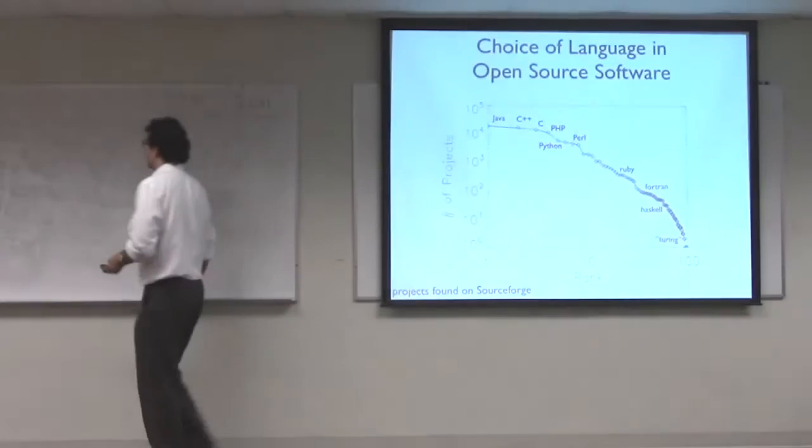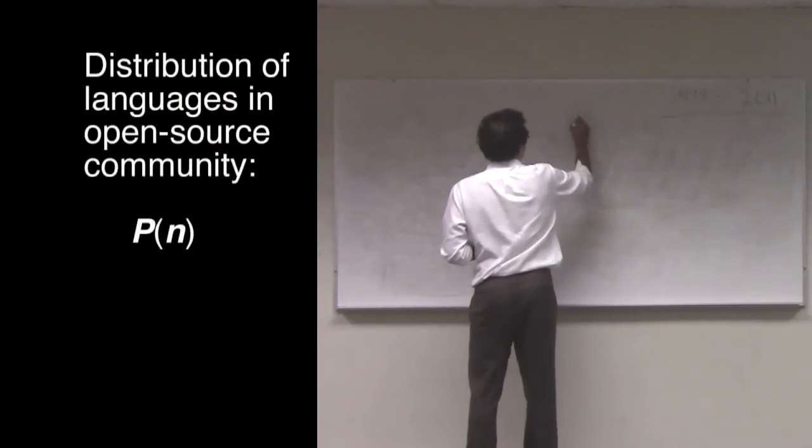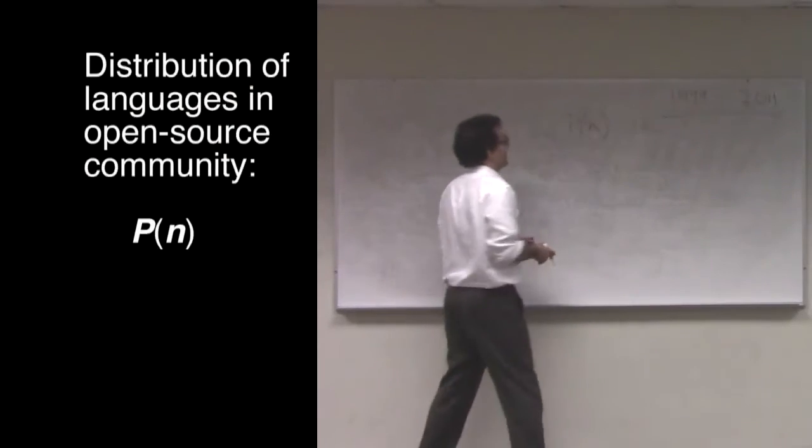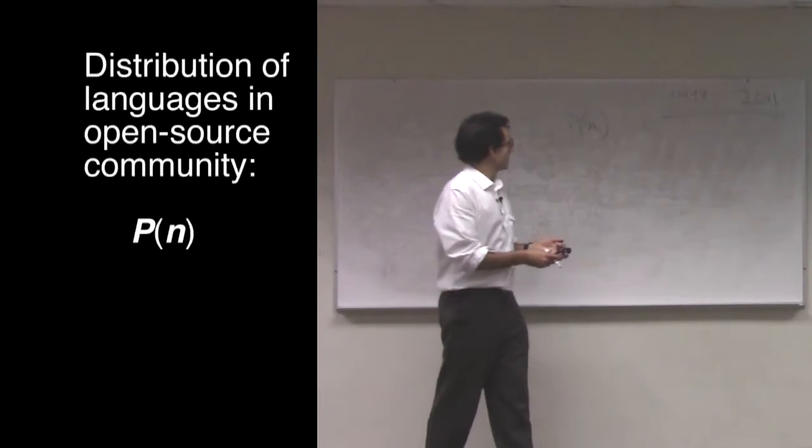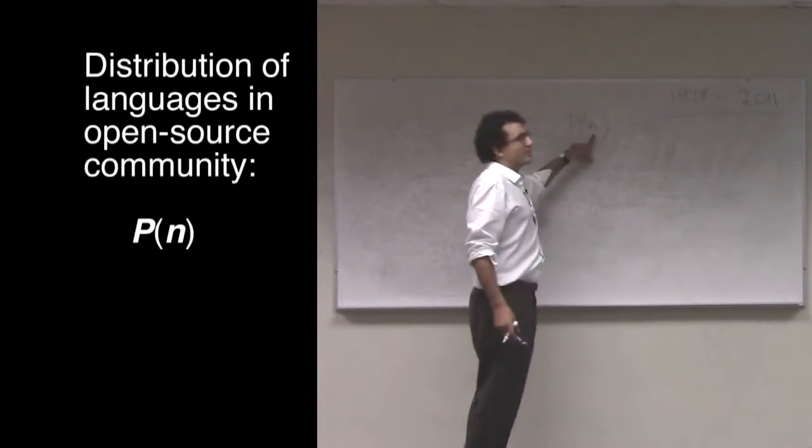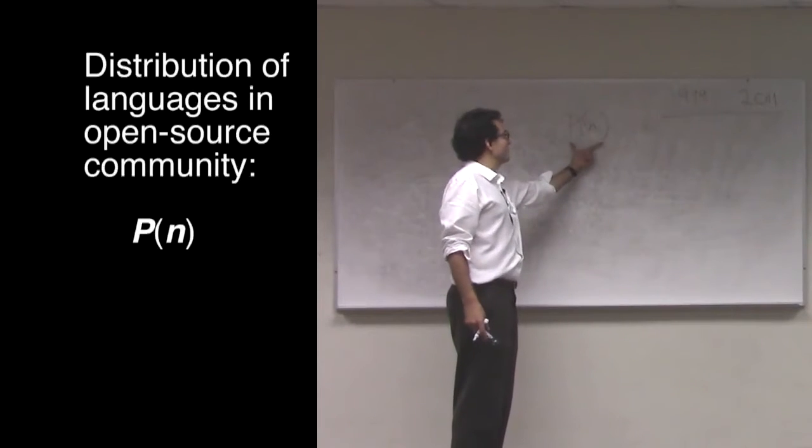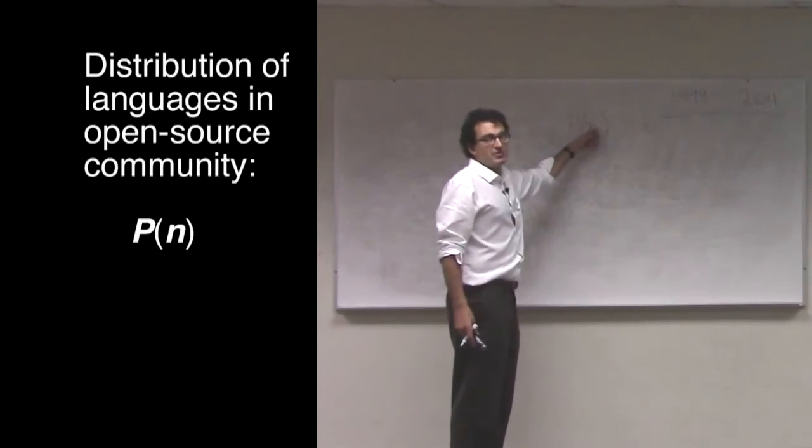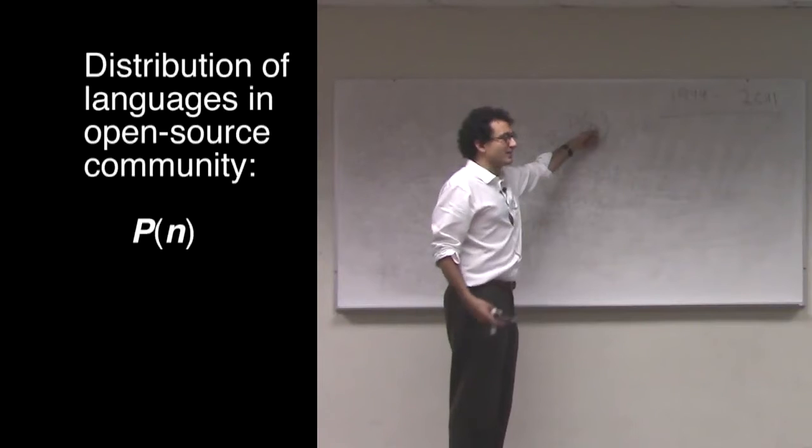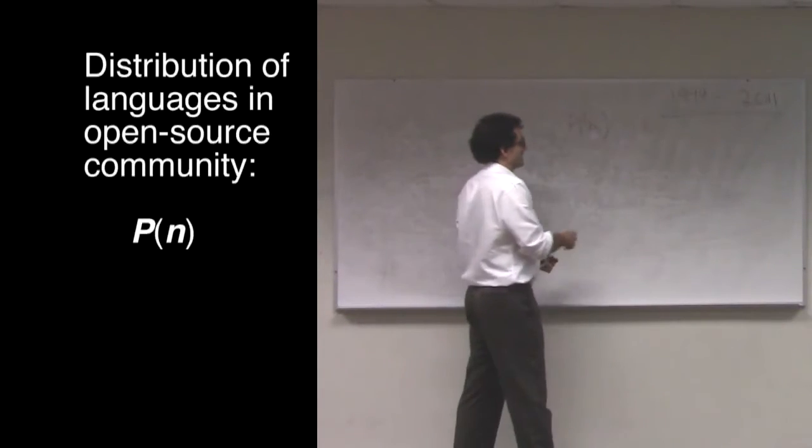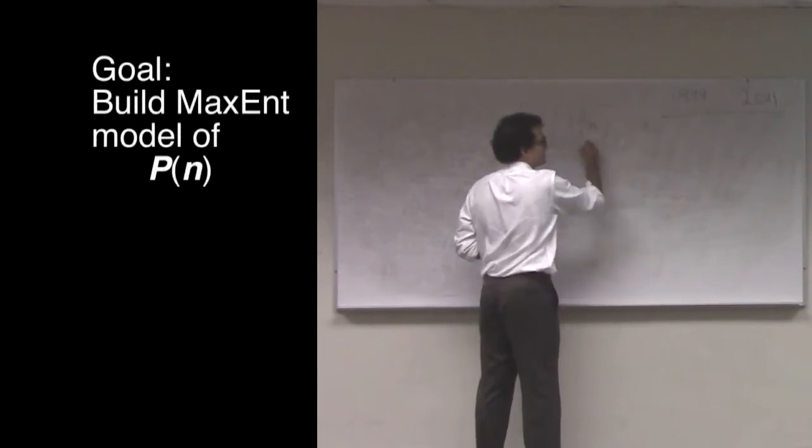I plotted that as a probability distribution. In fact, P of n, where n here is the number of projects in the open source community that use your language, and this is the probability that your language has n projects in the open source community. What we'd like to do is build a maximum entropy model of this distribution here.